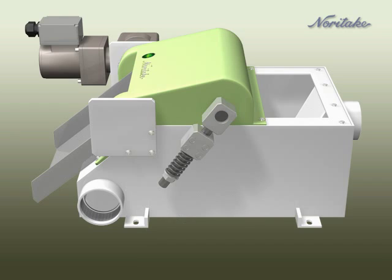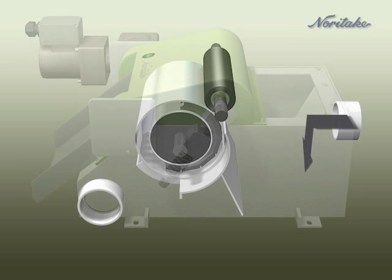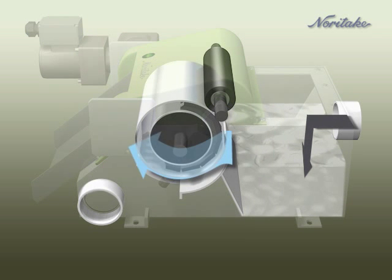Dirty coolant is supplied through the rear of the body and clean coolant is discharged from the side in the front.